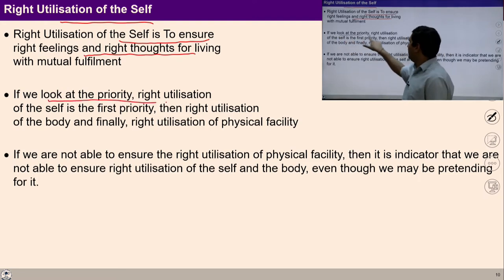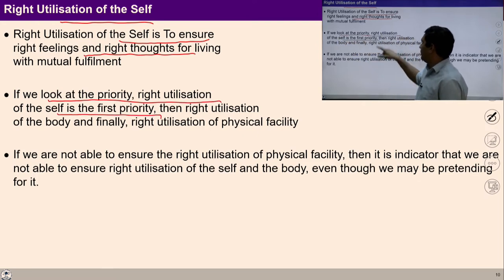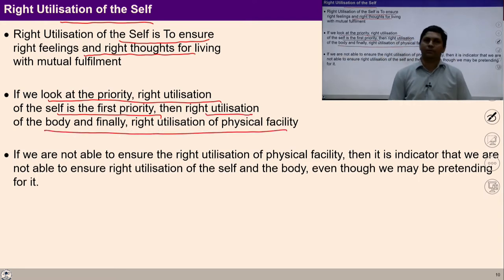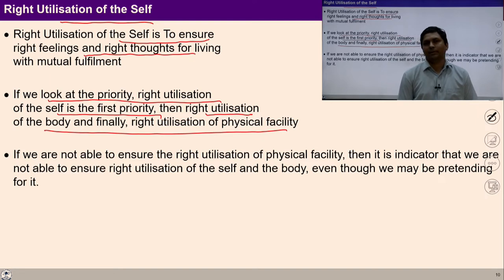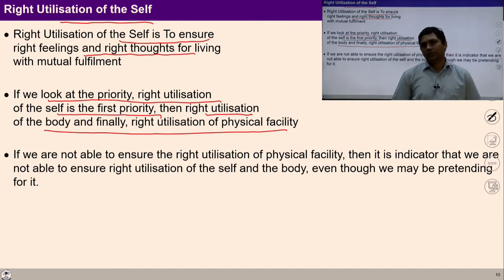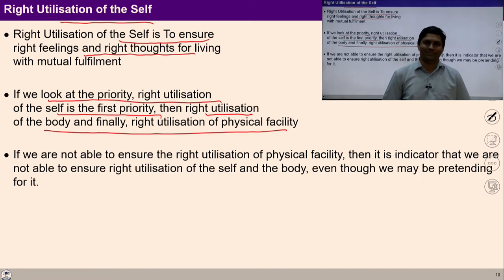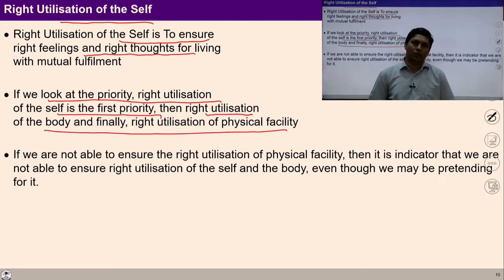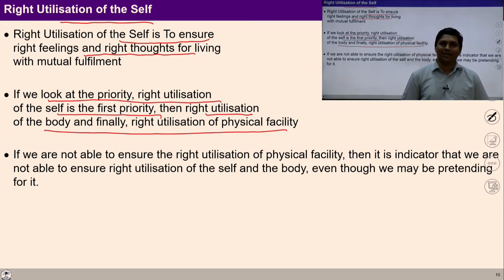If we look at the priority — right utilization of the self is the first priority, then right utilization of the body, and finally right utilization of the physical facilities. If I am not able to ensure right utilization of the self, if I am in contradiction, if I have desire against co-existence and relationship, then it becomes very difficult to ensure right utilization of the body. Once I am in contradiction, I use my body to spread this contradiction with the feeling of opposition and revenge, and I am also not able to rightly utilize the physical facility.